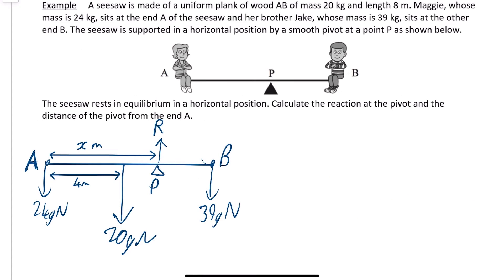This example says: A seesaw is made of a uniform plank of wood AB of mass 20 kg and length 8 meters. Maggie, whose mass is 24 kg, sits at the end A of the seesaw. And her brother Jake, whose mass is 39 kg, sits at the end B. The seesaw is supported in a horizontal position by a smooth pivot at point P as shown below. The seesaw rests in equilibrium in a horizontal position. Calculate the reaction at the pivot and the distance of the pivot from the end A.